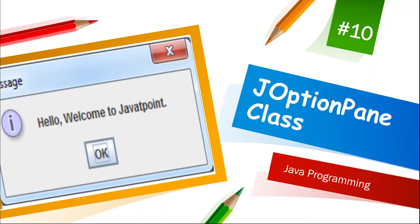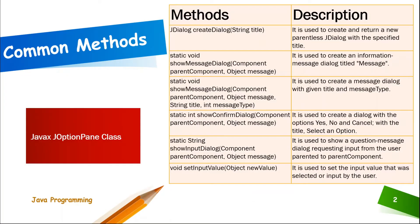We will have JOptionPane class for today's session. This is a different way of accepting and displaying input and output from the user, making it more graphical when it comes to accepting input and displaying output. Let's start — we have now the different methods and description of the Java JOptionPane class.